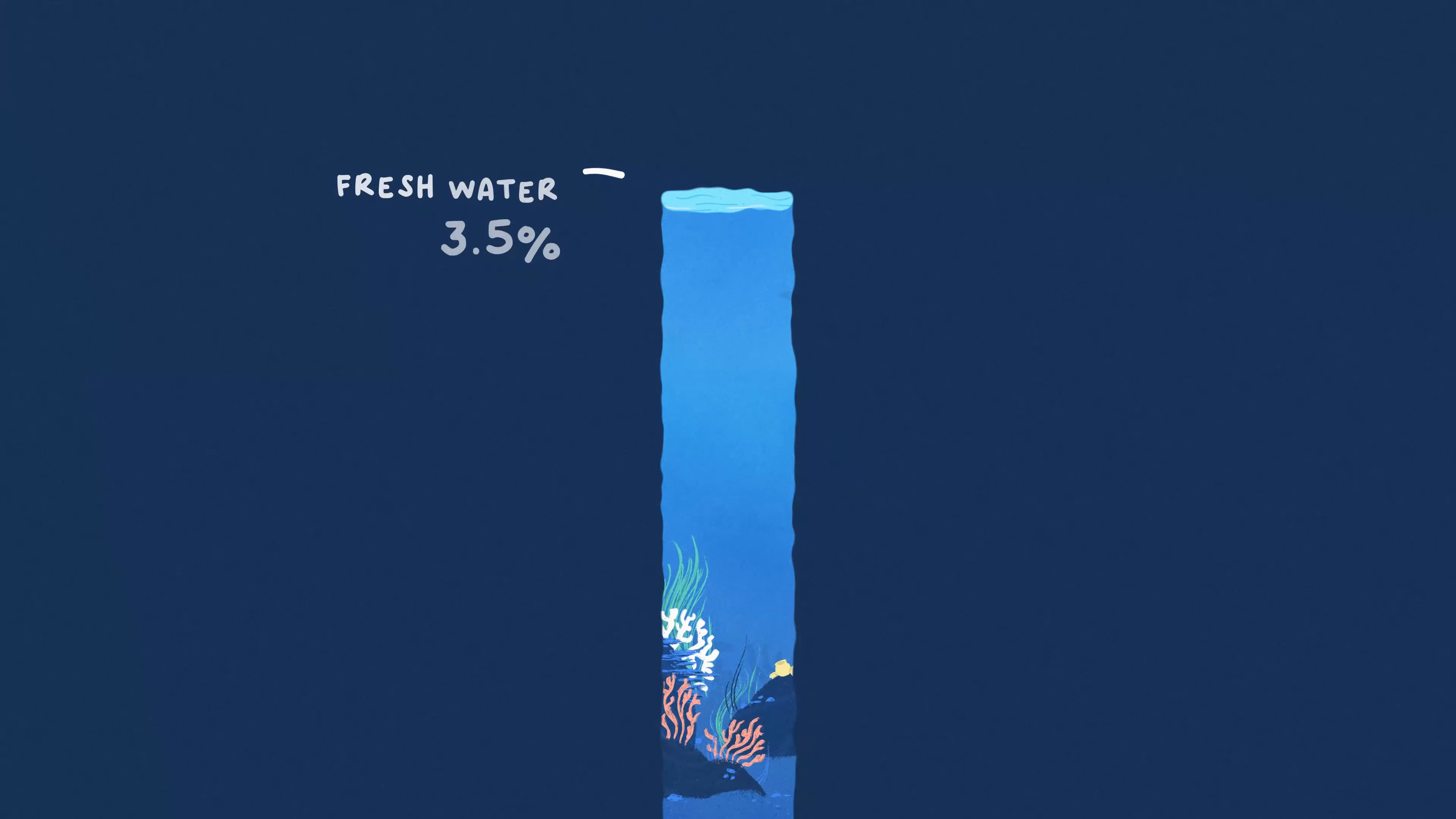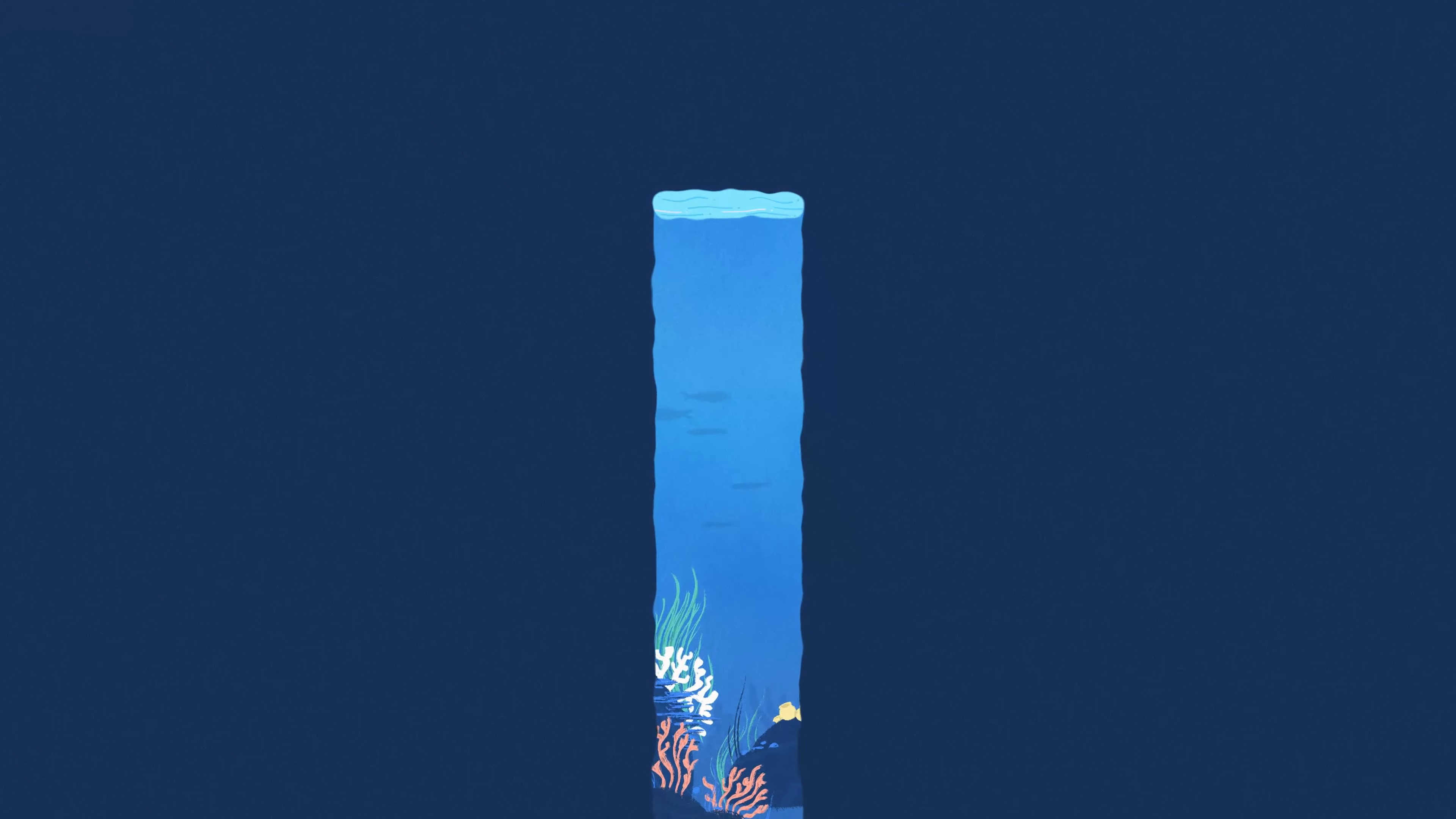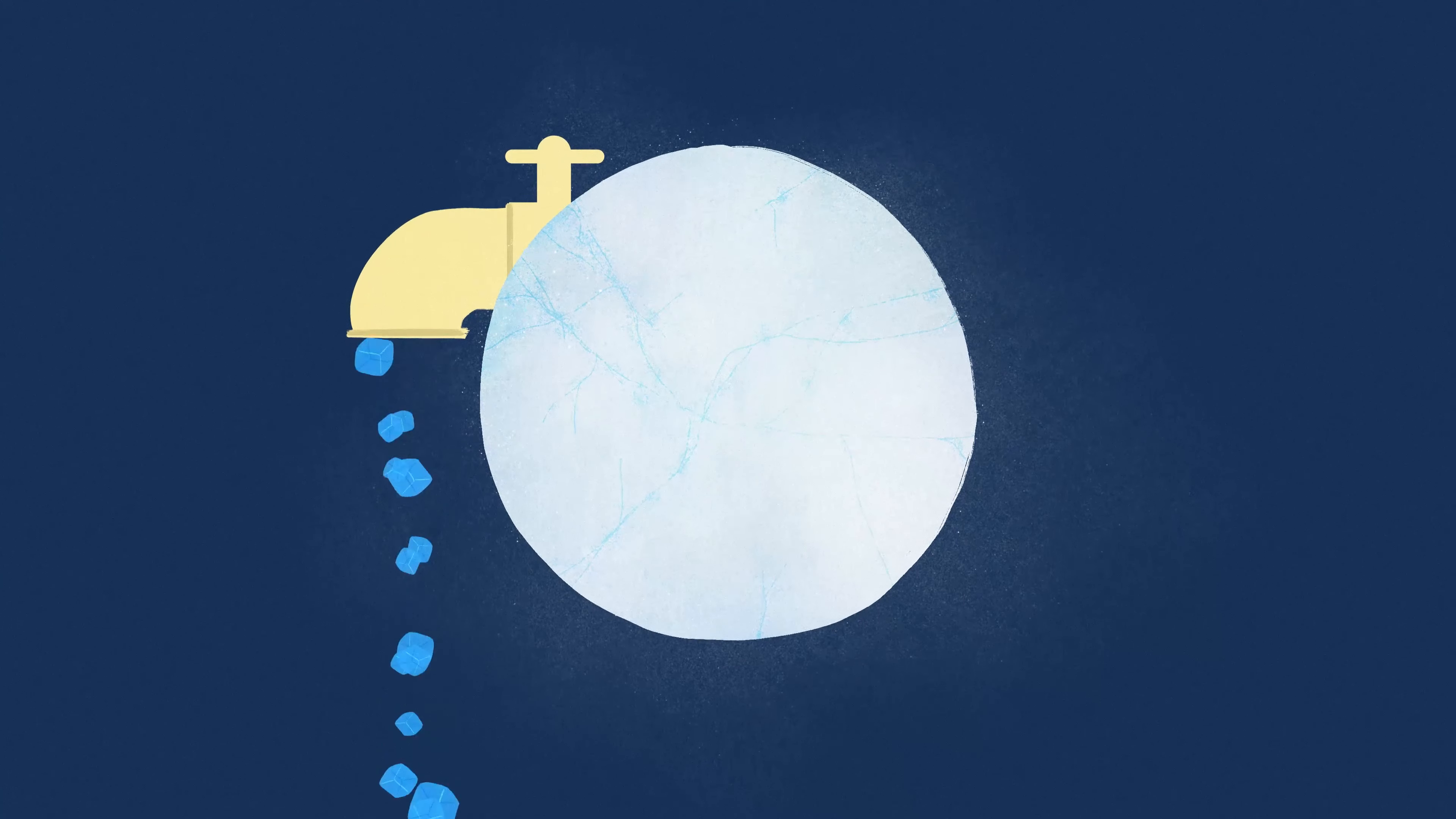That means just 3.5% of Earth's water is fresh and might be used for drinking or watering crops. Might is the important word here. Nearly half of Earth's freshwater is frozen solid in glaciers, ice caps, and permanent snowpack, making it pretty tough to access as usable water.